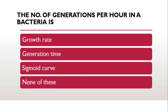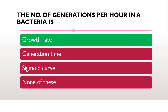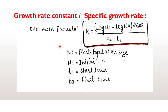Next question: the number of generations per hour in a bacteria is whether it is growth rate, generation time, sigmoid curve, or none of these. The correct answer is growth rate. Growth rate is calculated by the growth rate constant — that is specific growth rate, denoted by k — wherein Nf is the final population and N0 is the initial population, with t2 as final time and t1 as start time.